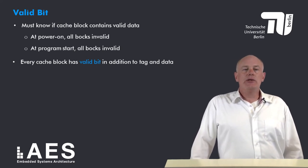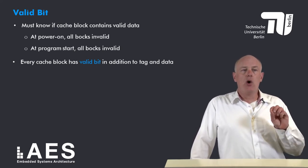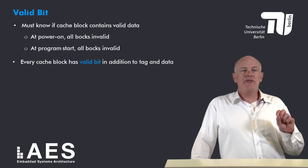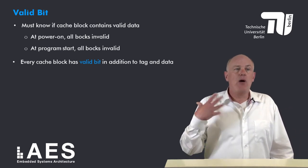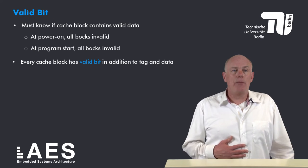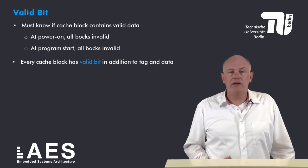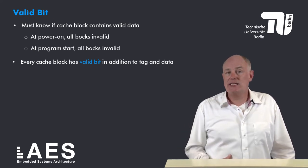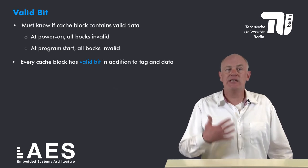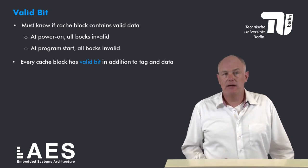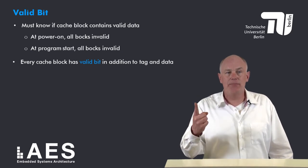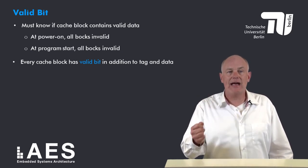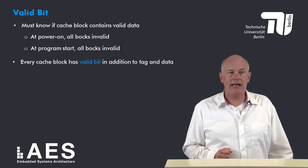There's another issue: we must know if the cache block contains valid data or not. At power-on, for example, all blocks are invalid, but block address zero at cache index zero is a valid address. Therefore every cache block has a valid bit in addition to the tag and in addition to the data.